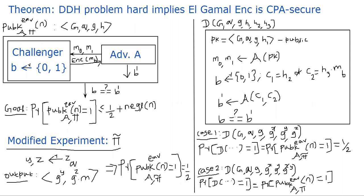Our goal is to set up an experiment as follows. We have a challenger and an adversary. The adversary, as part of the first step, will emit two messages M0 and M1, both from the publicly agreed-upon group G of order Q. G is the generator, H is the public key. The adversary picks M0 and M1 from group G because ElGamal encryption only works within the group. The challenger will randomly select a bit — 0 or 1 — and encrypts one of the messages, either M0 or M1, and sends it to the adversary.